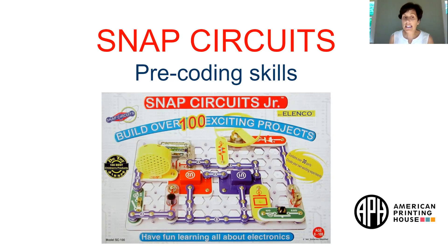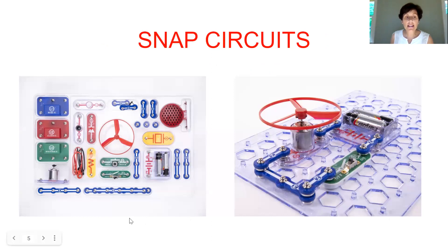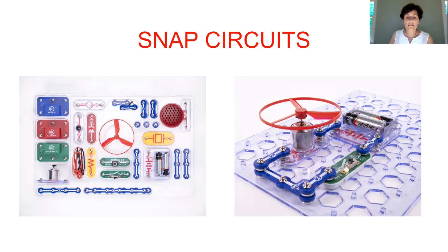You need really no training on this, but APH does have a lot of videos you could watch. When you open the box, these are the pieces laid out — there are switches, a fan, a noisemaker, and a grid board marked A through F going across and numbered. I put braille labels down the side for the letters.